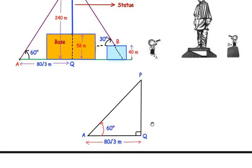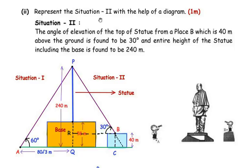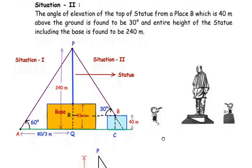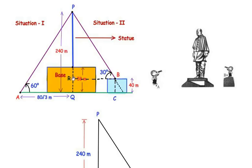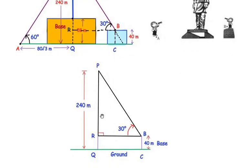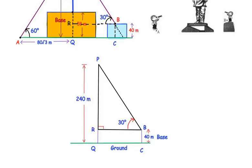In the second question, we represent the information given in situation 2 with the help of a diagram. I have extended a line from point B towards the statue and base, connecting at point R, and drawn a perpendicular height to point C. The diagram shows triangle PRQ. The student stands at point B on a 40-meter-high base, looking at the top of the statue (240 meters including base) at an angle of elevation of 30 degrees.